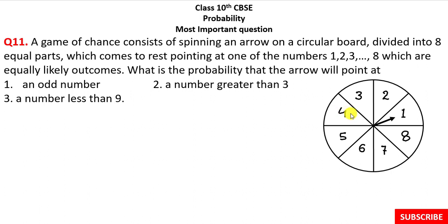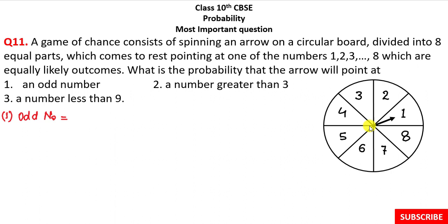We need to find out the probability that this arrow will point at an odd number. This is a game, and we need to tell what probability the arrow will have to rest and point at an odd number. In this question, we need to check how many odd numbers are on this circular board.